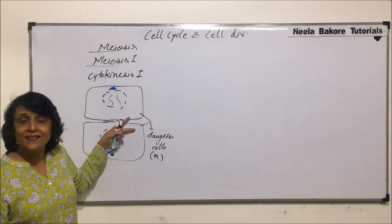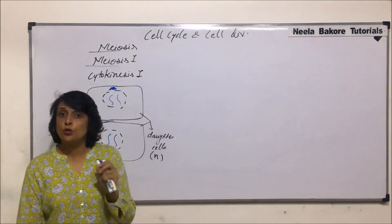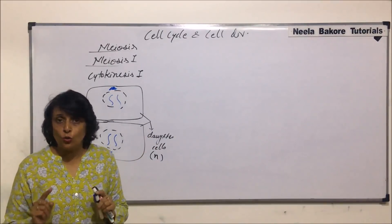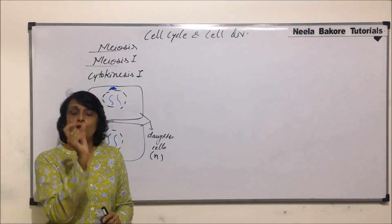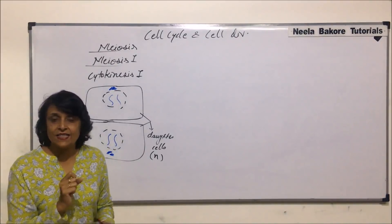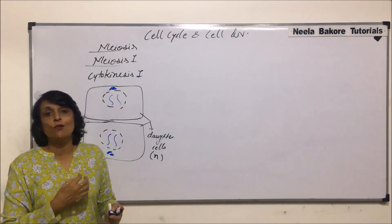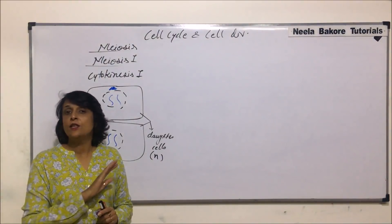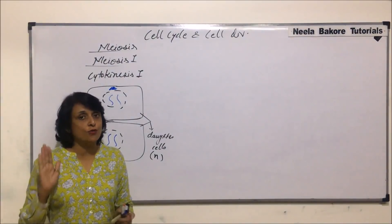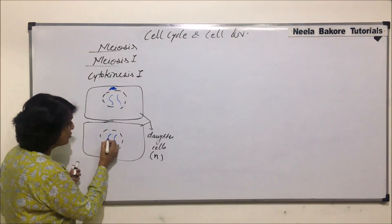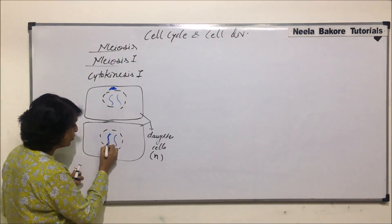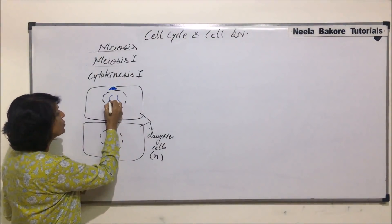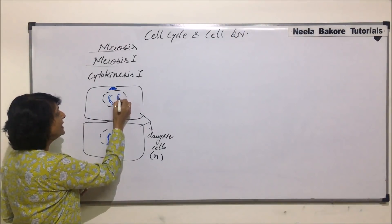Both these cells now have to enter meiosis 2. Between meiosis 1 and meiosis 2, there is no interphase. There is a short phase called interkinesis during which the cell prepares itself for the next division. Since there is no S phase, there is no DNA replication taking place.